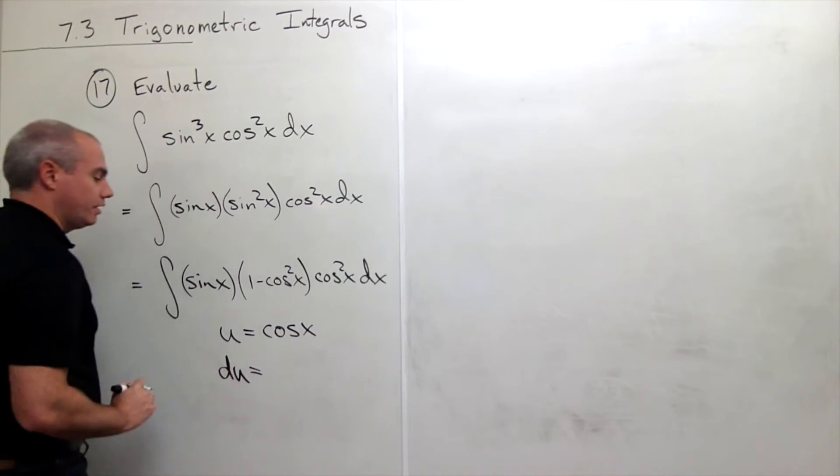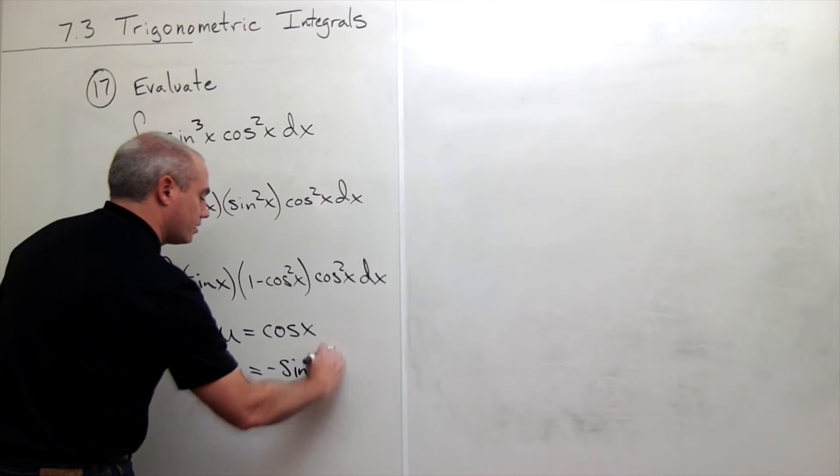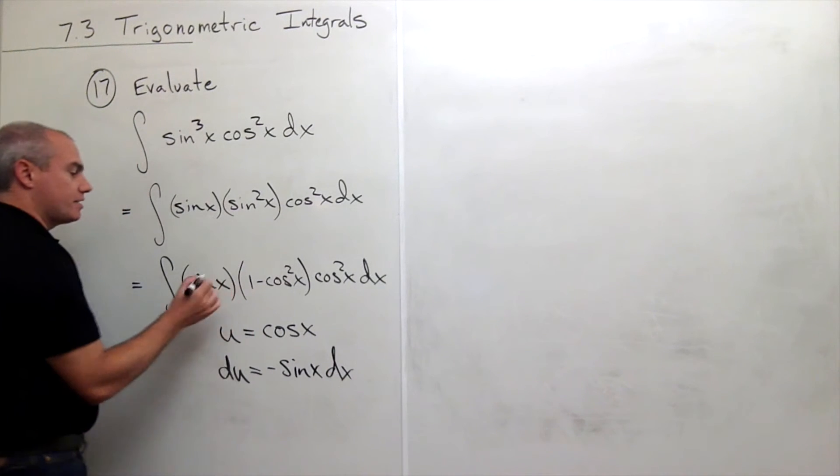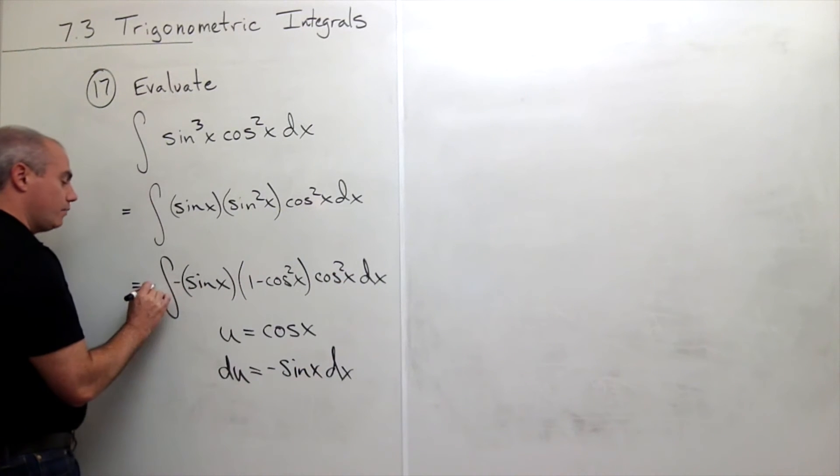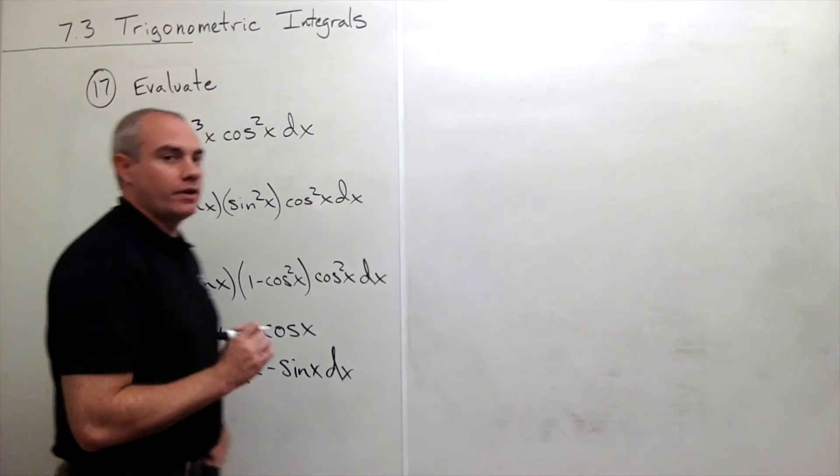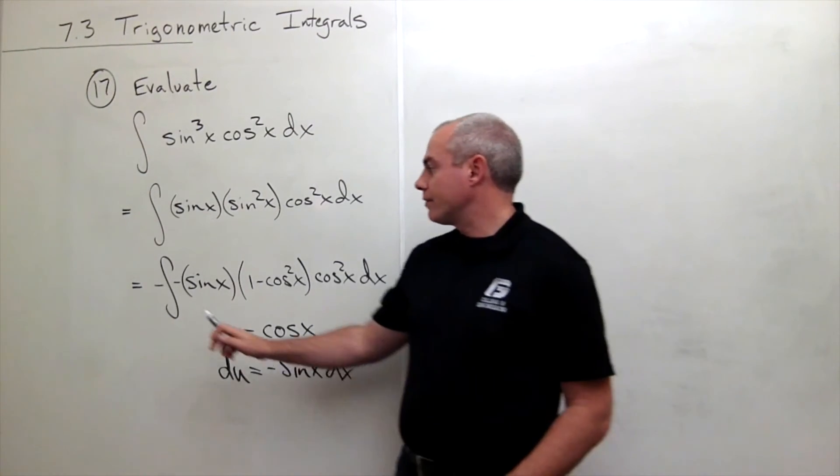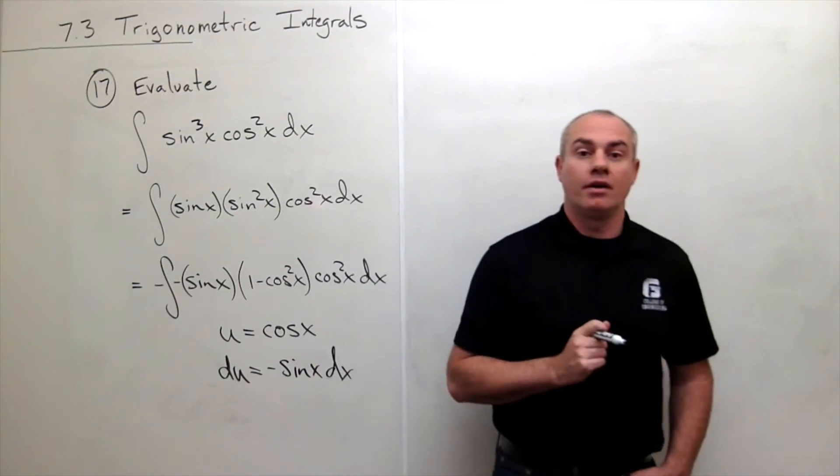Then du is negative sine of x dx. So since I need a negative sine x dx to make my substitution, I'll put in this negative so I have negative sine x dx, which means I also need a negative on the outside of the integral to cancel it out. So now everything's fine and we're ready for our substitution.